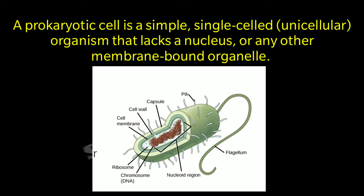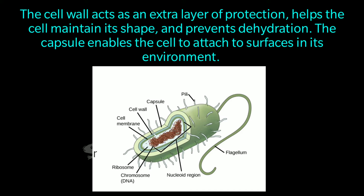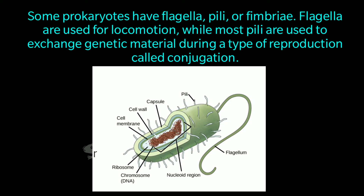As shown in the picture of a bacterium, bacteria have a cell wall made up of peptidoglycan — comprised of sugar and amino acids — and many have a polysaccharide capsule. The cell wall acts as an extra layer of protection, helps the cell maintain its shape, and prevents dehydration. The capsule enables the cell to attach to surfaces in its environment. Some prokaryotes have flagella, pili, or fimbriae; flagella are used for locomotion while most pili are used to exchange genetic material during conjugation.